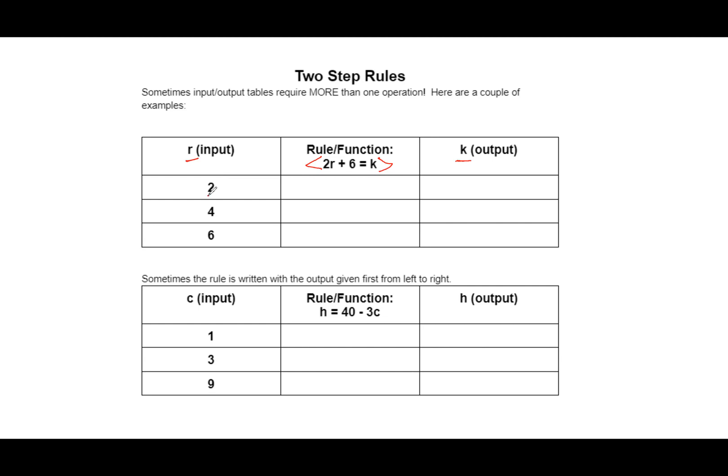So we're going to use this function here, this rule, 2R plus 6 equals K. All that means is like the code where we're just replacing that letter R with an actual number. In this first example, the R is a 2. Remember, no sign by means you multiply. I'm going to use a dot and leave a blank space here to replace our R. Plus 6 is in there, and then equals K. So 2 times what plus 6 equals K. And all we're going to do is replace the what with our actual number.